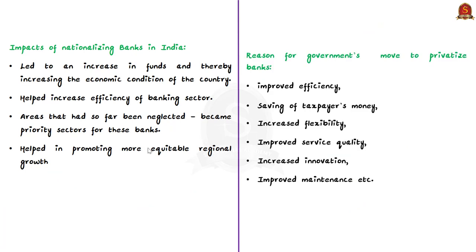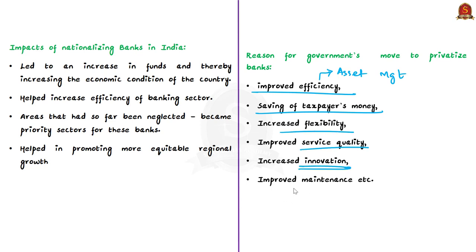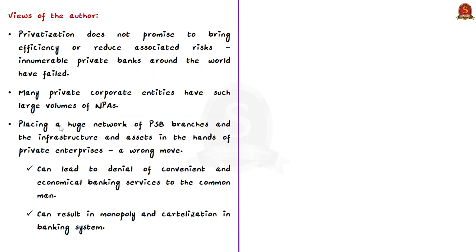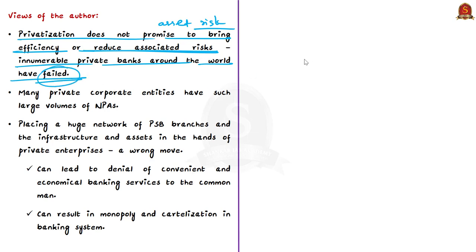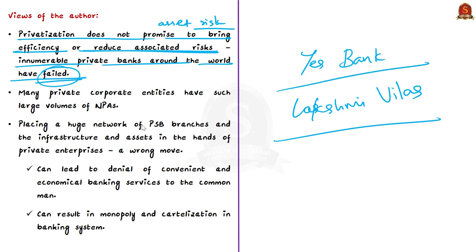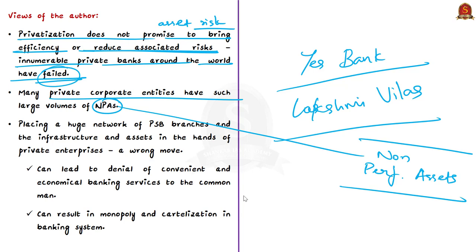Privatization is the transfer of ownership, property or business from the government to the private sector. The government's cited reason is to improve efficiency, with advantages including saving taxpayer money, increasing flexibility, improving service quality, increasing innovation, and allowing policymakers to guide rather than perform banking tasks. However, the author states that privatization does not promise to bring efficiency or reduce associated risks. The author notes that innumerable private banks around the world have failed, and in 2020, private firms such as Yes Bank and Lakshmi Vilas Bank faced challenges. Many private corporate entities also have large volumes of non-performing assets, so these challenges are not limited to public sector banks.